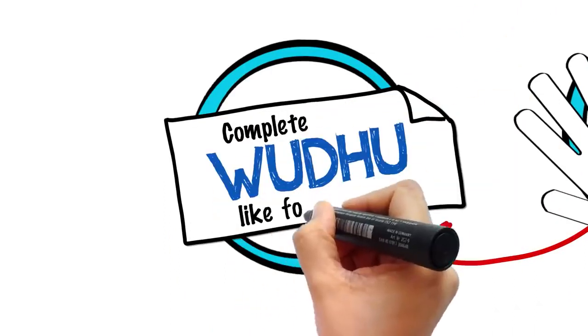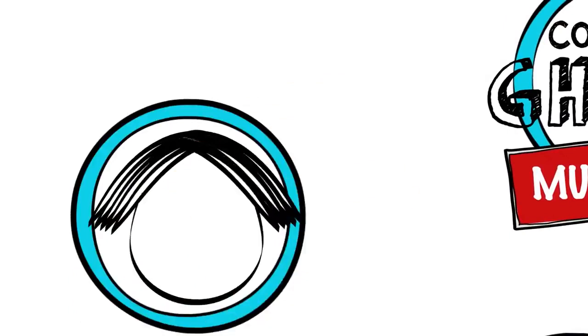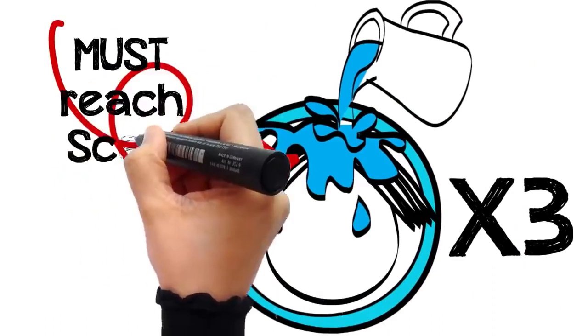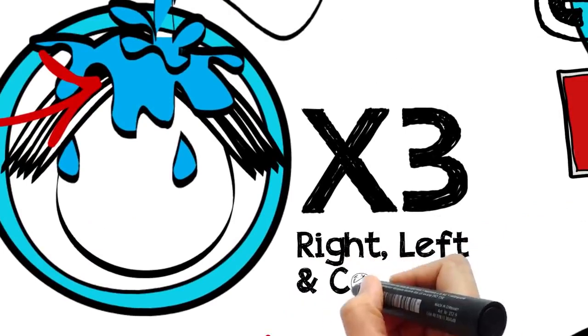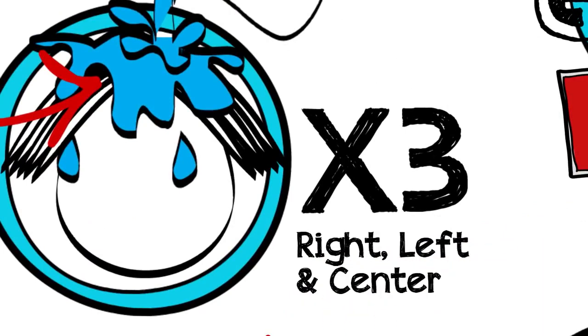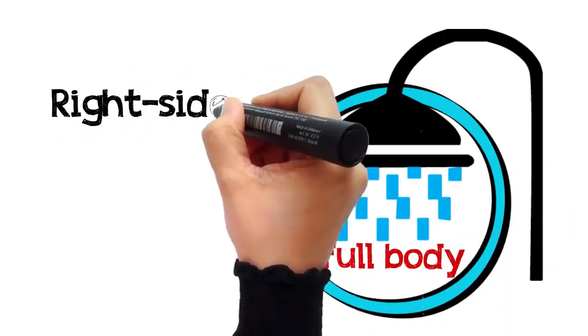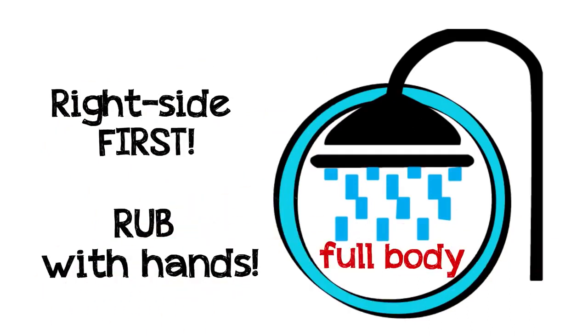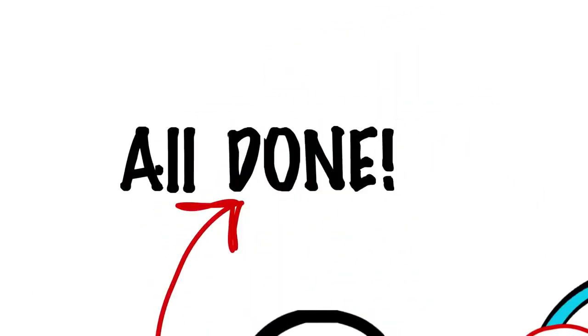Then pour water over your head three times, rubbing and making sure that it thoroughly reaches your scalp. Some scholars said three times means once on the right, next on the left, and then in the center. And then pour water and wash the entire body, beginning with the right side then the left, while rubbing it with your hands so that you are sure you haven't missed any part. So these are the etiquettes of the complete ghusl.